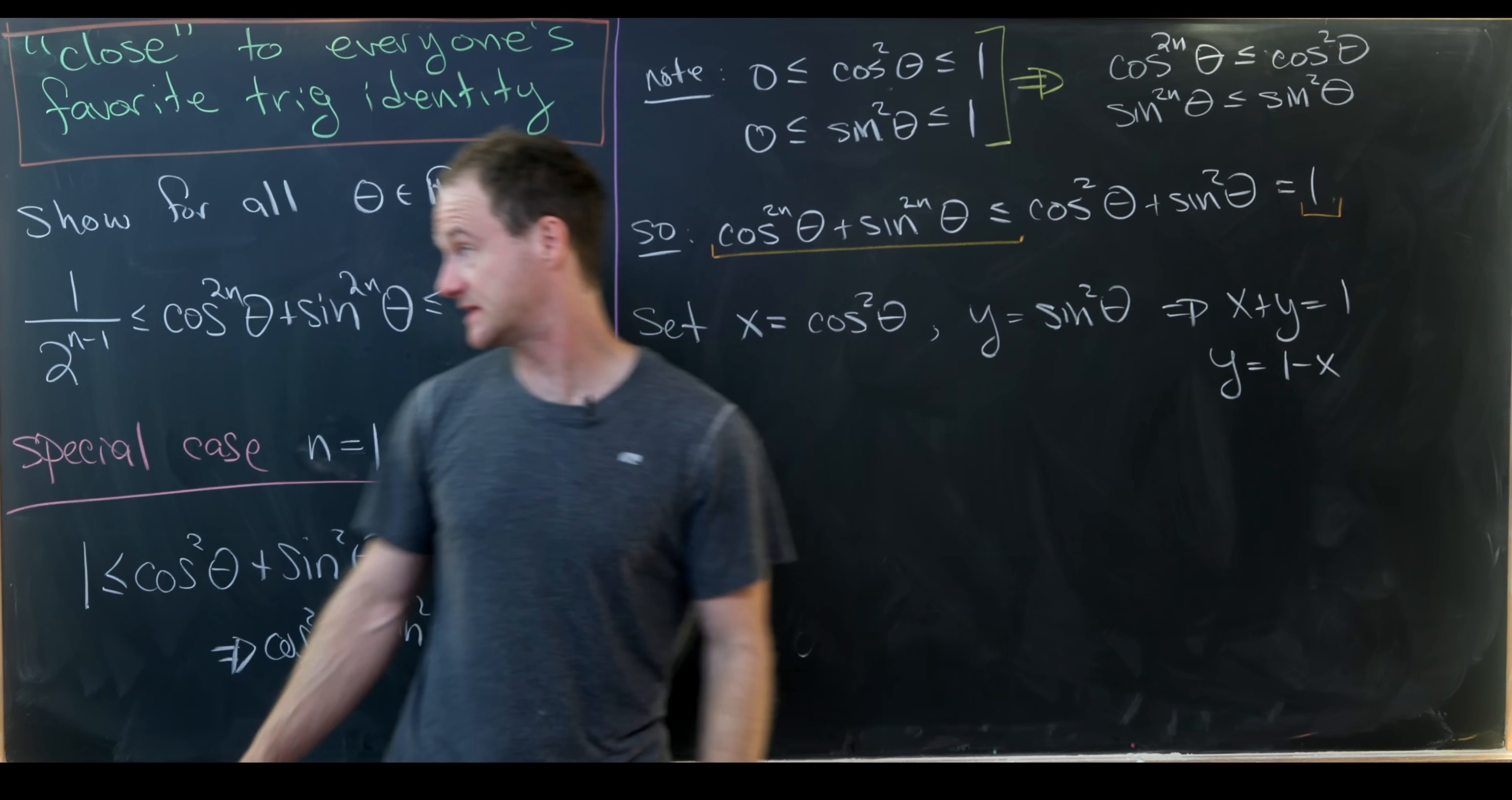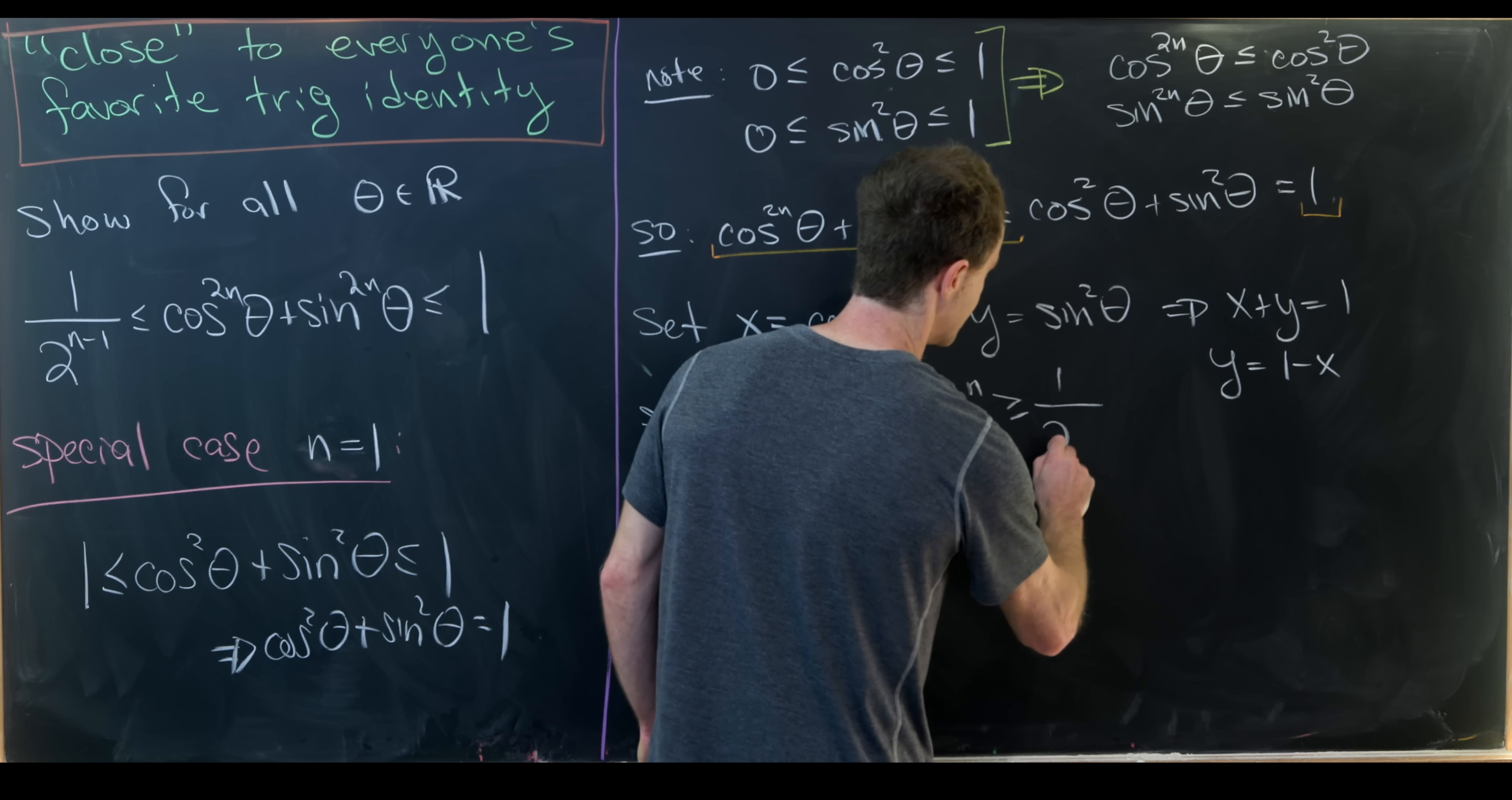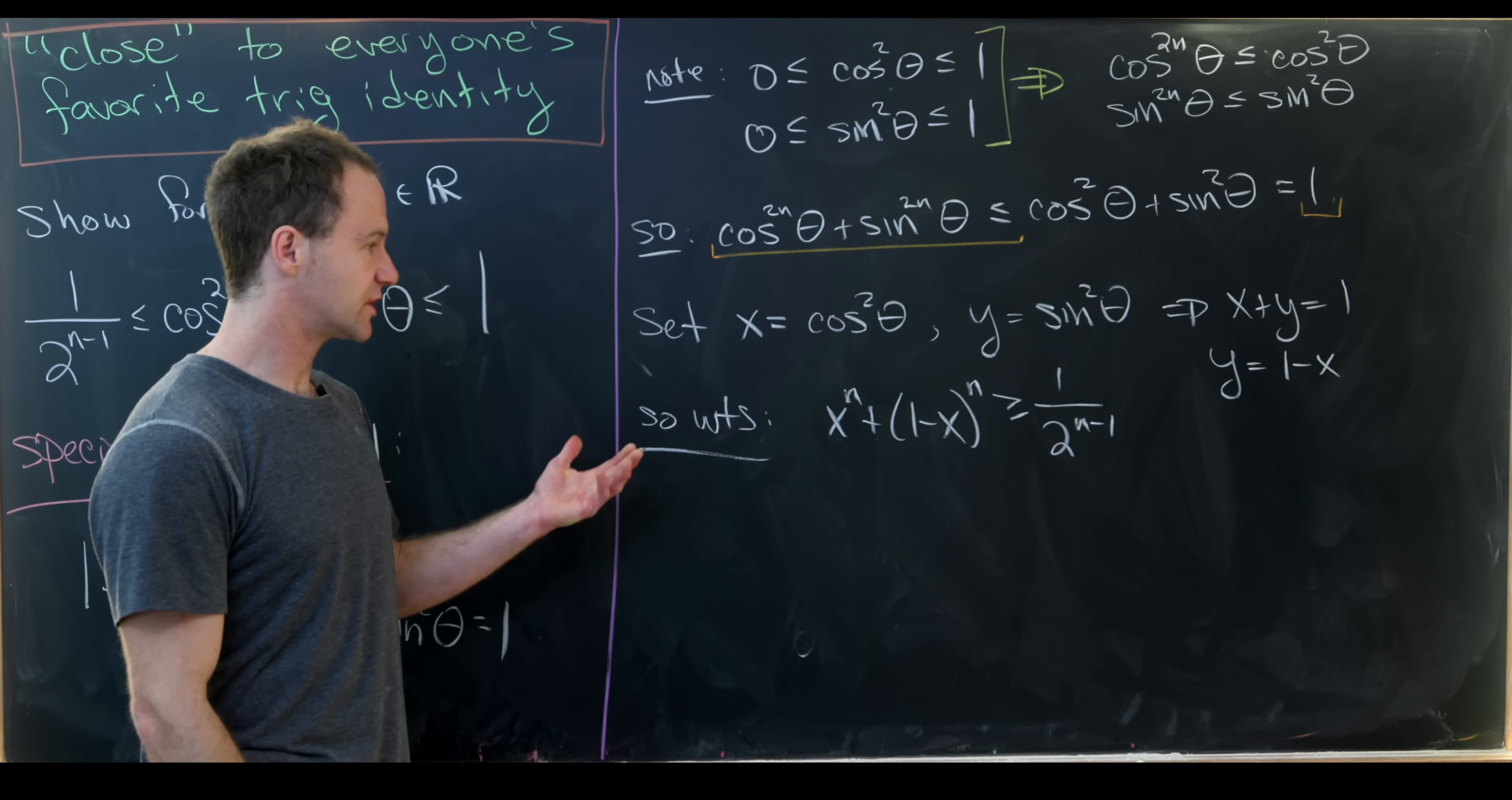And now we can rephrase our goal over here in terms of this setup. So we now want to show that x to the n plus 1 minus x to the n is bigger than or equal to 1 over 2 to the n minus 1. So notice that this is x to the n plus y to the n, but that is cosine to the 2n plus sine to the 2n. So that would retrieve this left-hand side of our inequality.